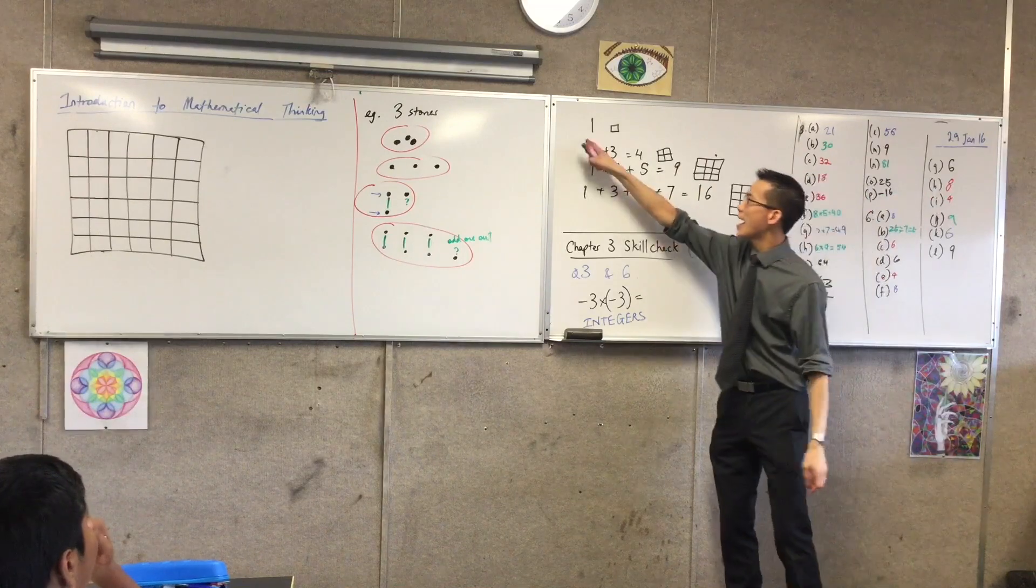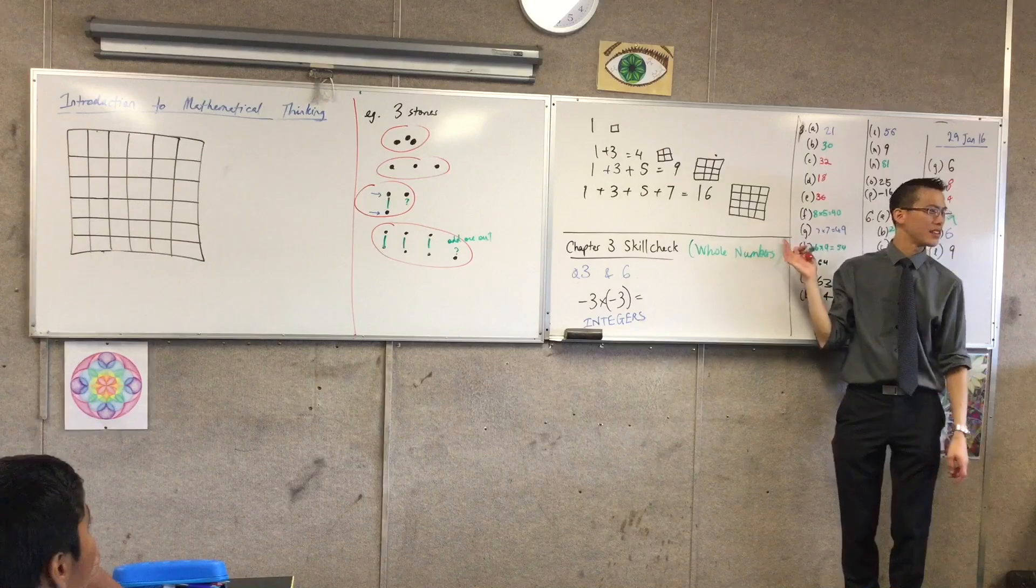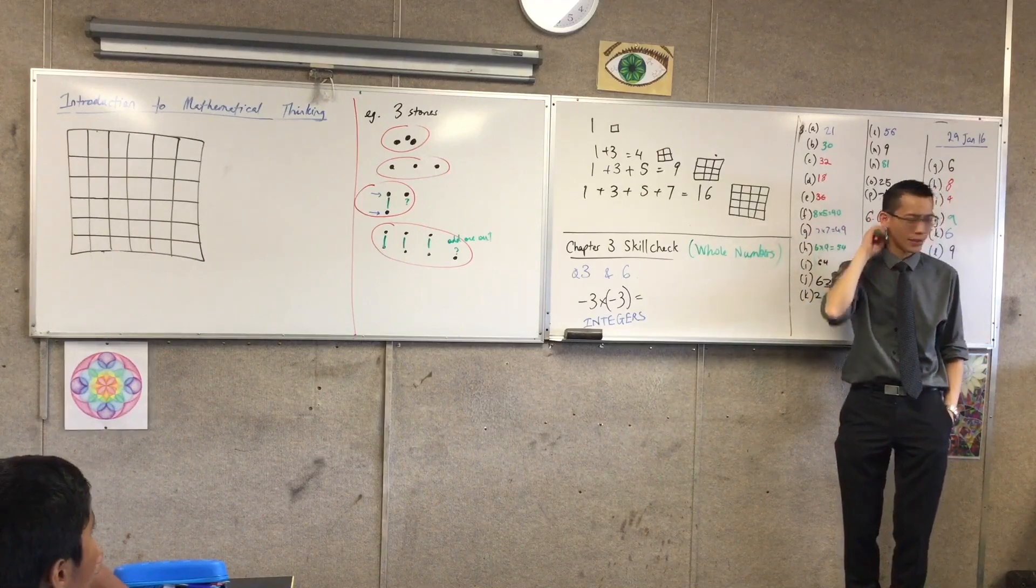Why is it that when I add odd numbers and I put them in order, I end up with squares? Why do they do that?